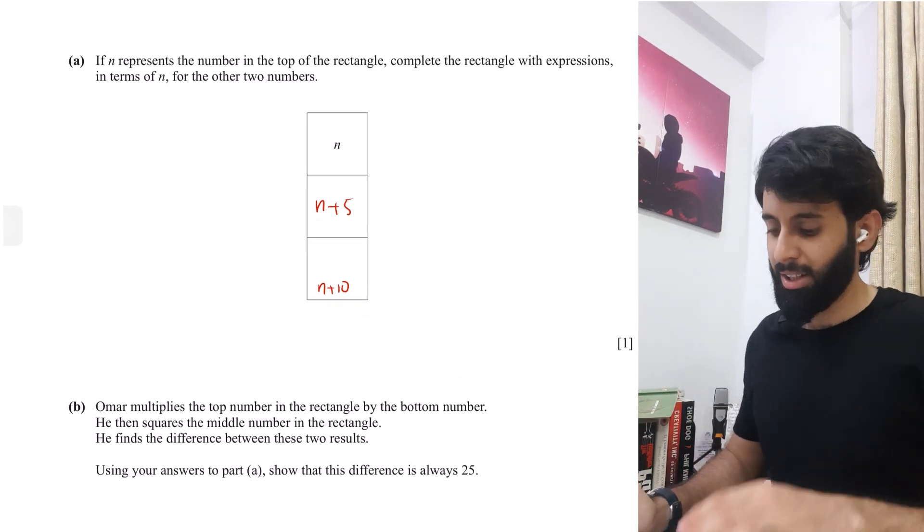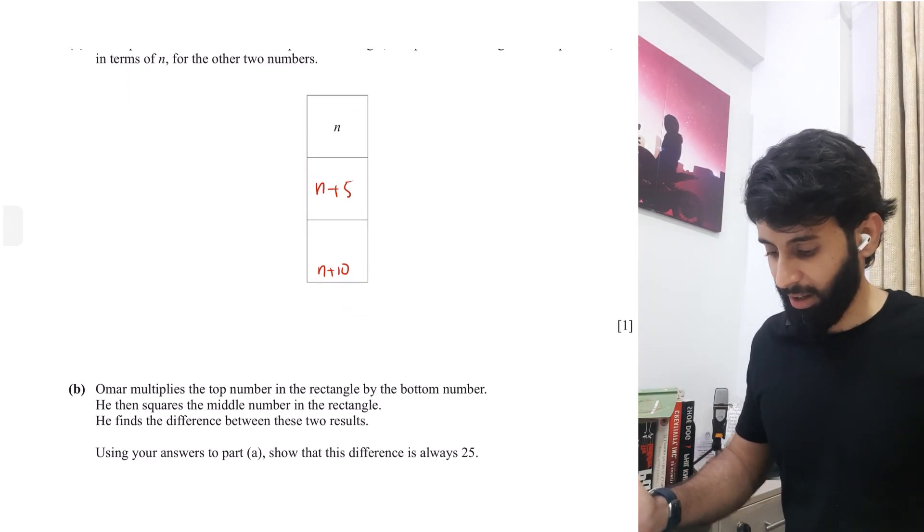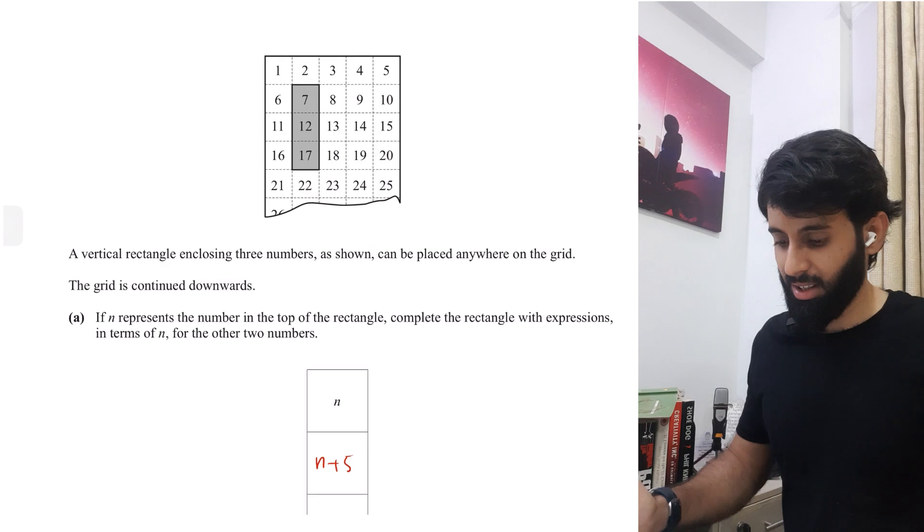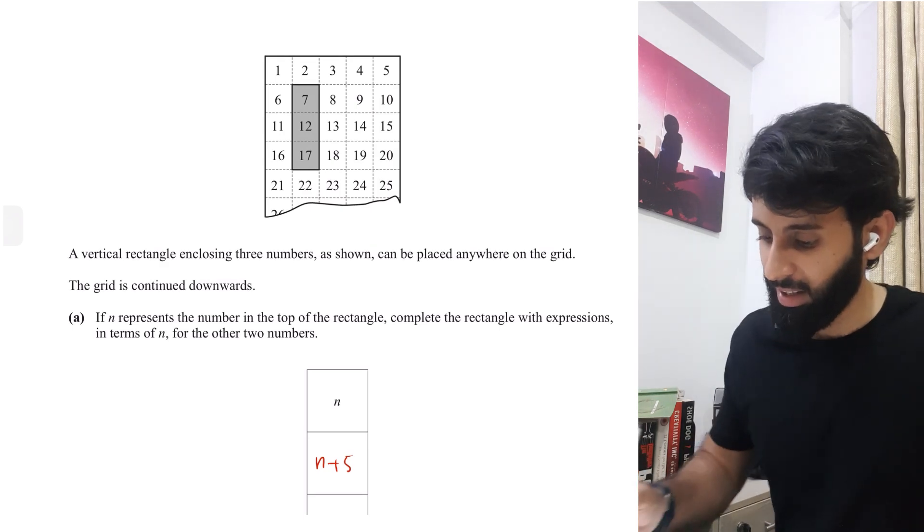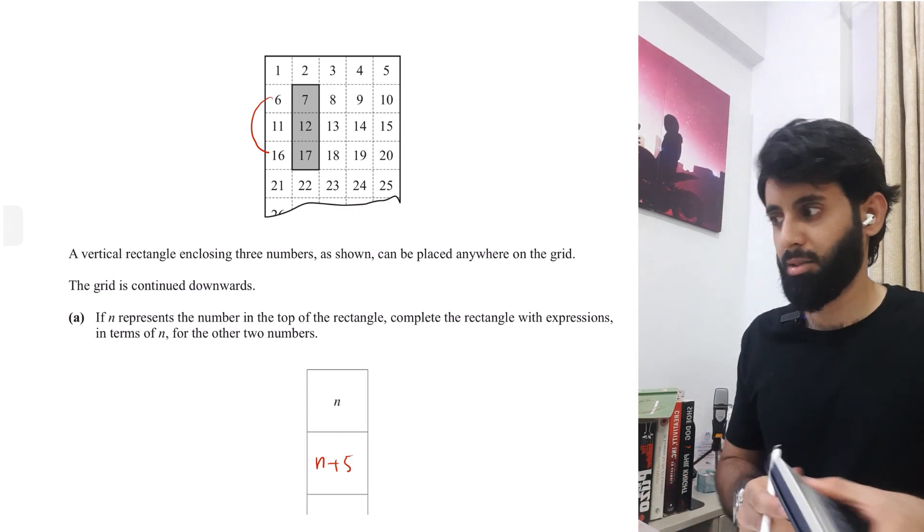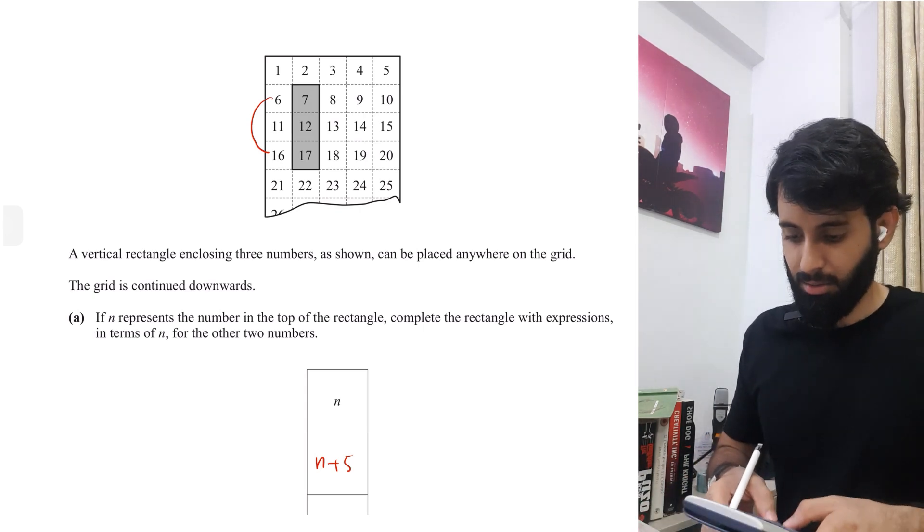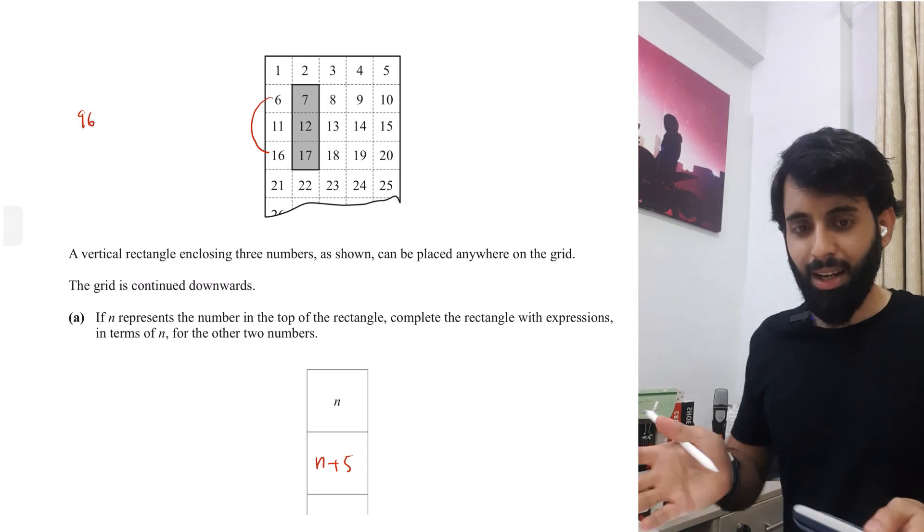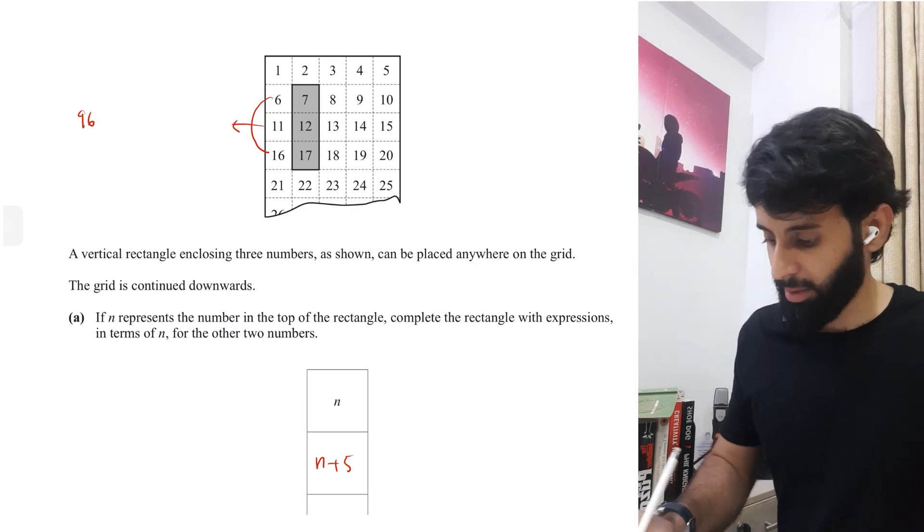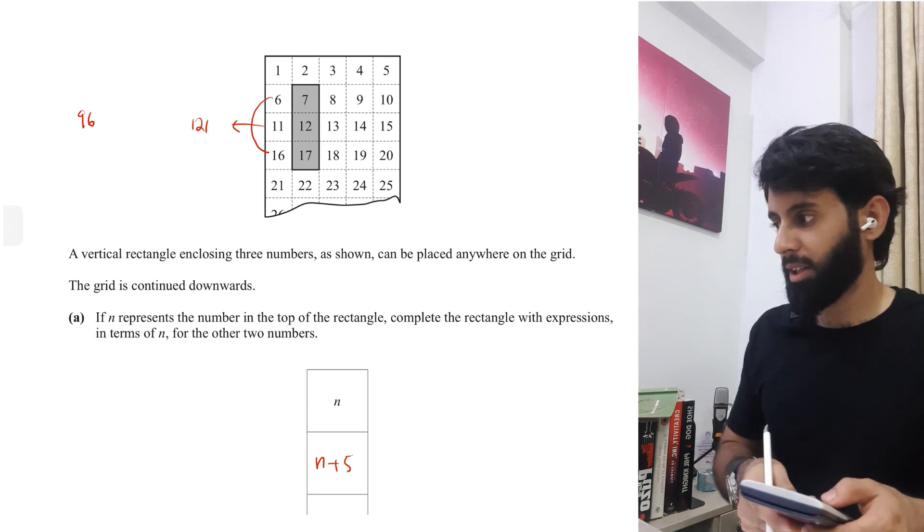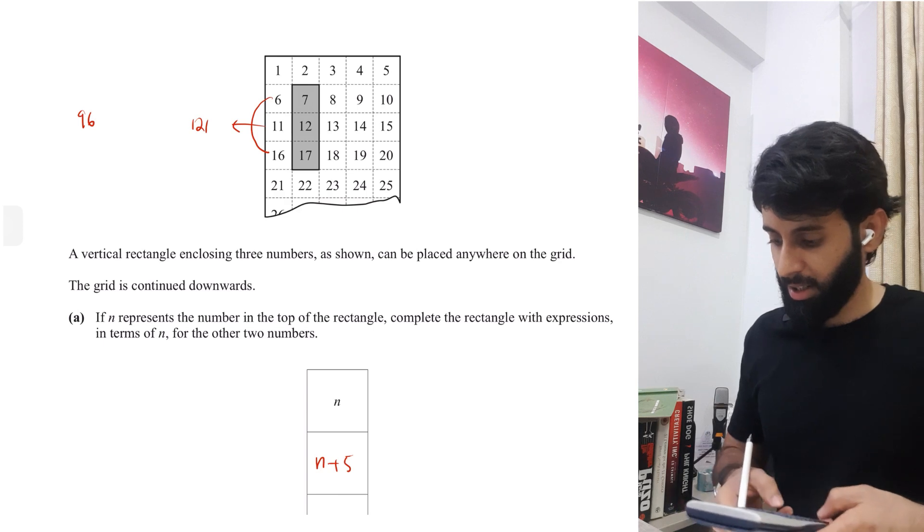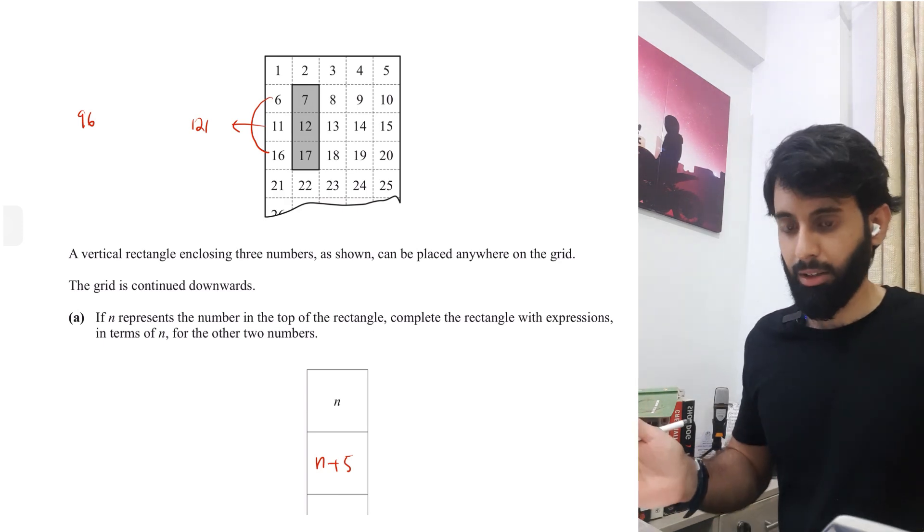Now let's not for a while use these answers in the grid in terms of n. Let's go back to the grid with actual numbers and see if this really makes sense or not. So basically what Umar is doing is that he's multiplying these two numbers, 6 times 16 which is 96, and then he's squaring the middle number. So that means the square of 11 is going to be 121, and then he's subtracting the two numbers. So that means 121 minus 96 which is equal to 25.